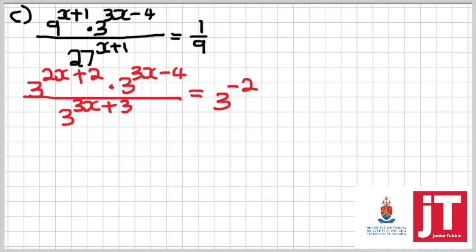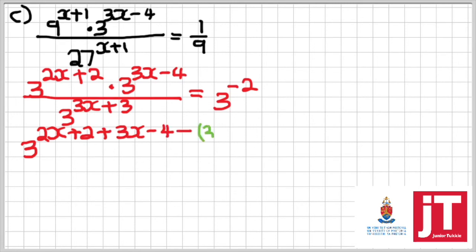Simplifying the left-hand side by applying all the laws of exponents — whenever we are multiplying bases that are the same, we add the powers, but also whenever we're dividing bases that are the same, we subtract. We're going to have a long expression written as 3 to the power 2x plus 2, plus 3x minus 4, minus in brackets 3x plus 3, is equals to 3 to the power negative 2.